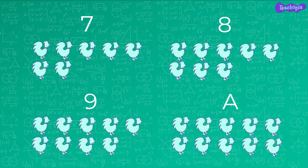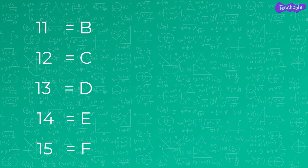If there are 10 hens, then we use alphabet A to represent the number of hens. Alphabet A is used as a symbol to represent 10 in the hexadecimal system. Similarly, if there are 11, 12, 13, 14, and 15 hens or objects, we use the alphabets B, C, D, E, and F.